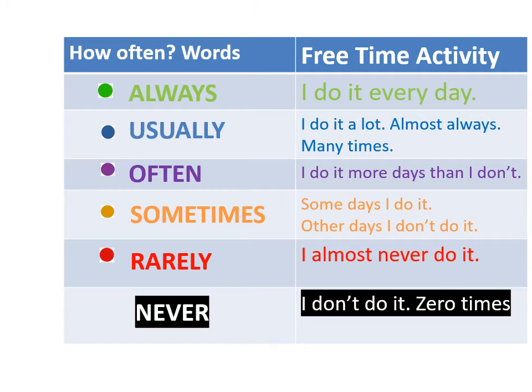Chúng ta có những từ về bao lâu một lần và các cách diễn đạt: 'always' nghĩa là I do it every day — tôi làm điều đó mỗi ngày. 'Usually' — I do it a lot, almost always, many times — tôi làm điều đó nhiều, hầu như là luôn luôn, nhiều lần. 'Often' — I do it more days than I don't — nghĩa là phần thời gian tôi làm điều đó nhiều hơn phần thời gian tôi không làm.